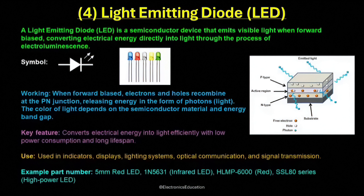Infrared LEDs are used in remote controls, security sensors, and optical communication systems, while high-power LEDs are used in projectors, stage lighting, and flashlights where intense brightness is required. Some common LED examples include the standard 5mm red LED, the 1N5631 infrared LED, the HLMP6000 red LED, and the SSL80 series high-power LED.